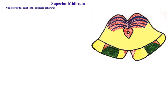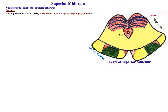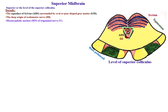Superior midbrain, or level of the superior colliculus. Dorsally, the aqueduct of Sylvius is surrounded by nearly oval or pill-shaped gray matter. There is the deep origin of the oculomotor nerve, the third cranial nerve, and the mesencephalic nucleus of the trigeminal nerve, the fifth cranial nerve.